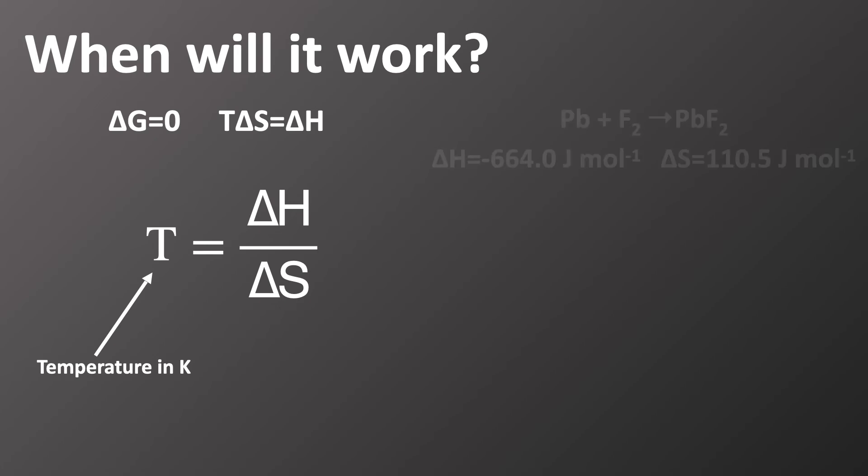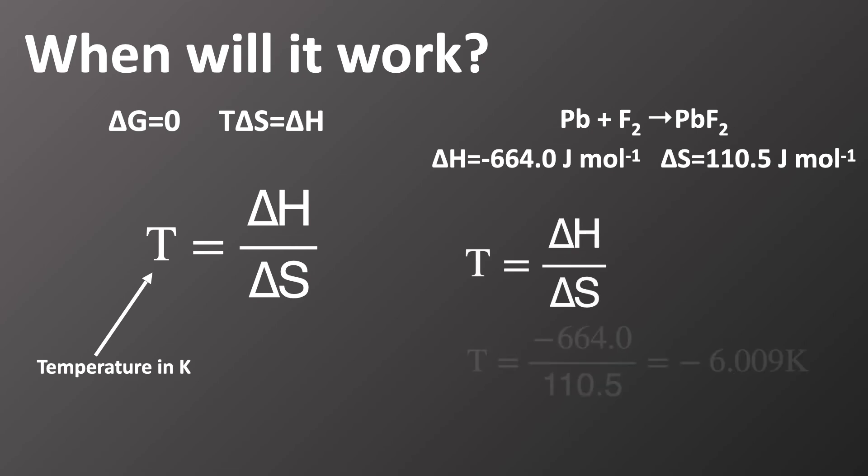If we look at an example of lead reacting with fluorine to form lead fluoride, all we need to do is take our T equals delta H divided by delta S, plug the numbers in, and find that the feasible temperature is minus 6.009 Kelvin.